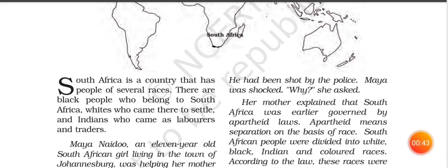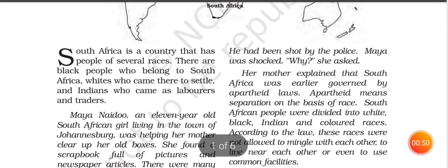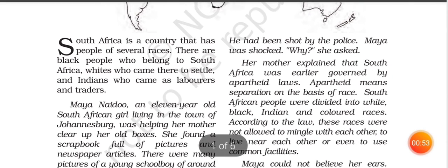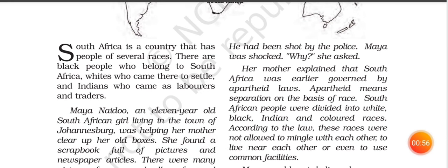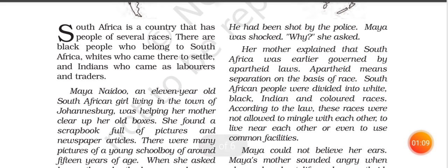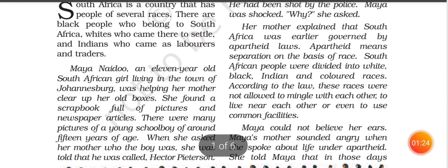As you know, South Africa is a country that has people of several races. There are black people who belong to South Africa. There are colored people — colored means they are neither black nor white. Even in Africa, there is diversity. Like India, as we read in Chapter 1 about diversity — India is a land of diversity, and Africa is also a land of diversity.